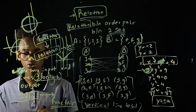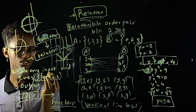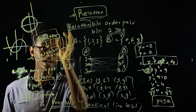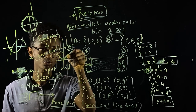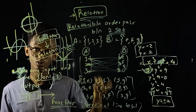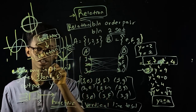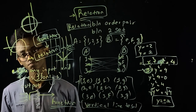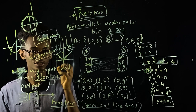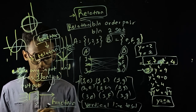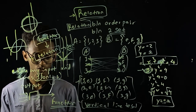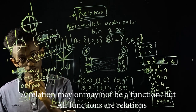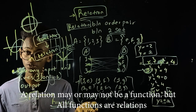So this is an exception that I have to say: if the graph and the vertical line intersect at more than one point, the graph is not a function. A relation may or may not be a function.